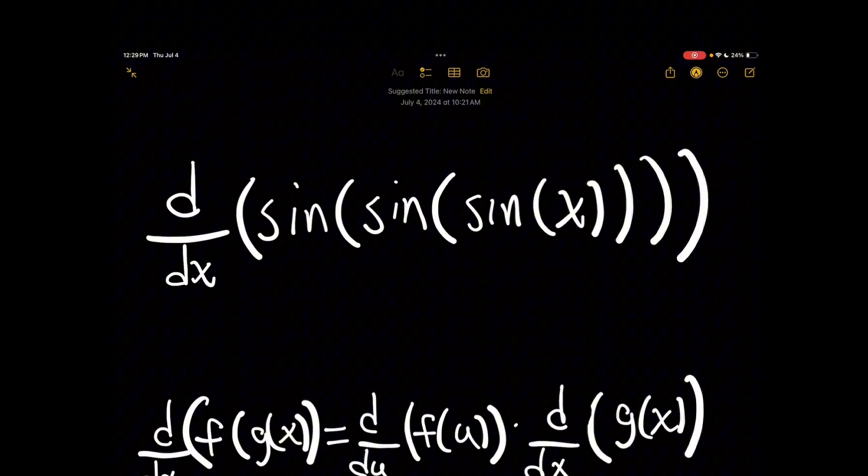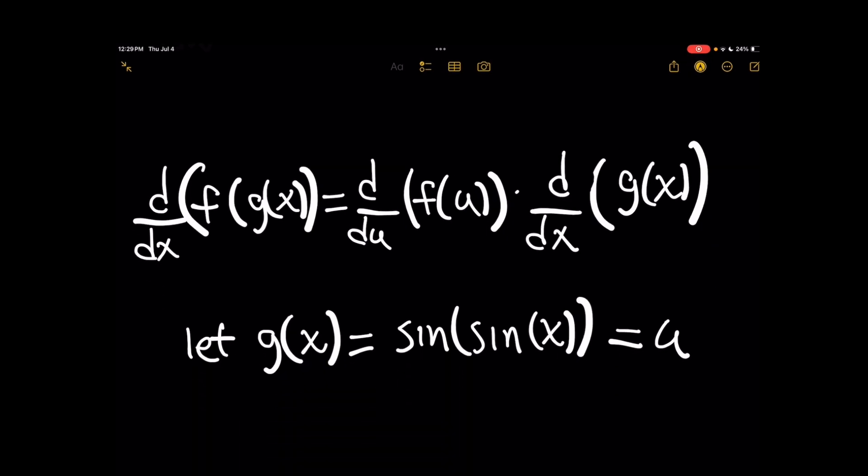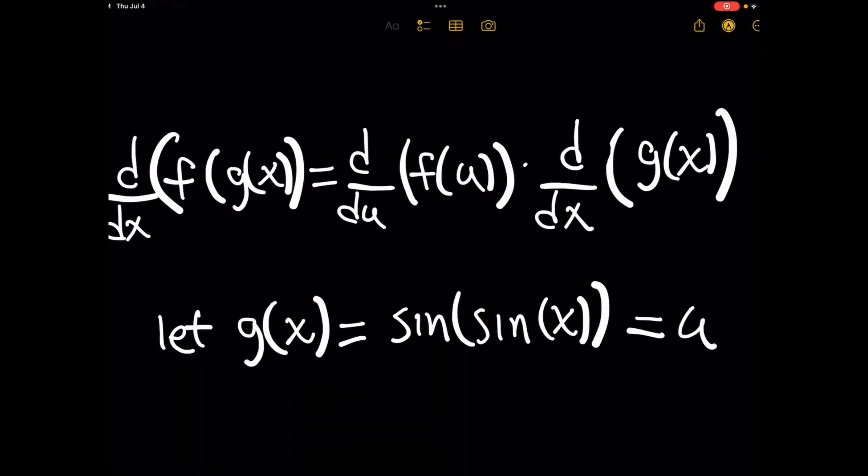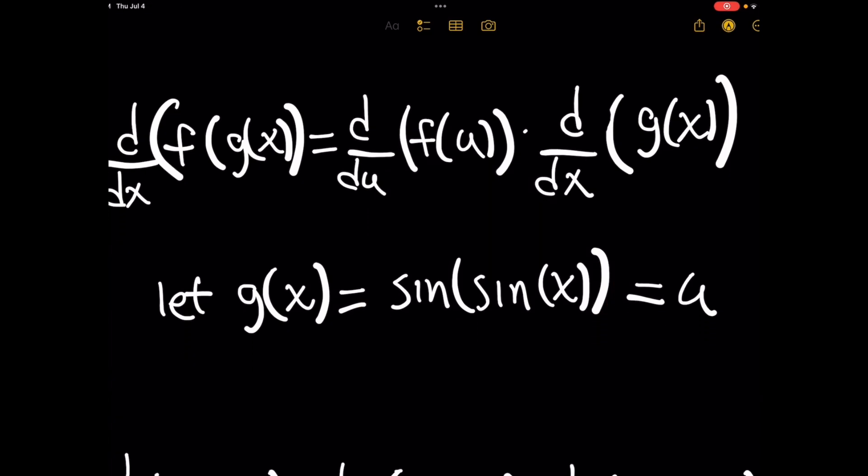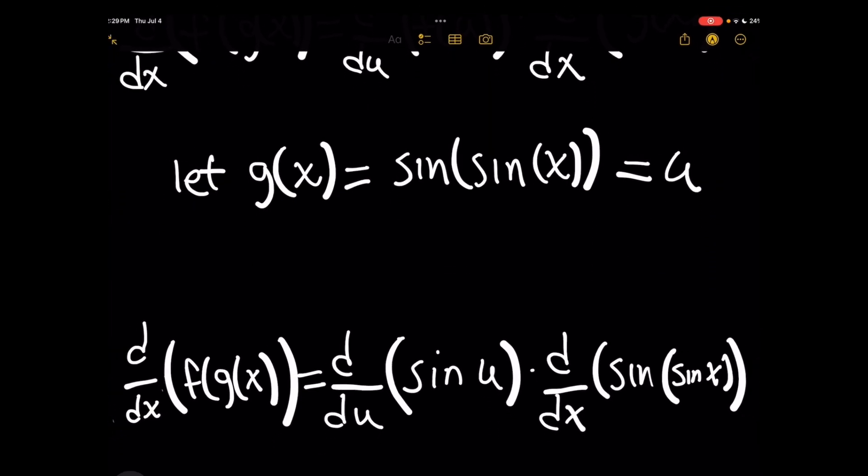So everything to the right of this leftmost sine operator that we see here, we're just going to call it u. So we're going to let g of x be all of that, which is sine of sine of x being the sine to a new variable called u. And then this becomes a much simpler sine of u problem.